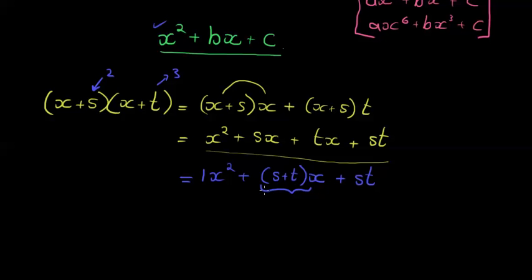The coefficient for the x term - there's the x term, coefficient is what I'm multiplying in front of it - is b. So I get that b is equal to the sum of these two values. If I take this and this together I get my coefficient for my middle term. And when I multiply these two I get c.